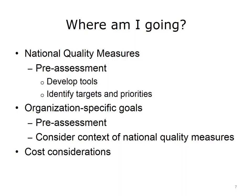In addition to the national quality measures, there may be organization-specific goals. While some of these will come from a similar pre-assessment, others may have already been identified. These, too, need to be prioritized, especially in the context of the need to address the targets for the national quality measures. As part of the prioritizing, assessment of the cost of developing quality improvement interventions versus the potential fiscal costs of not working on each area need to be considered.